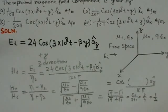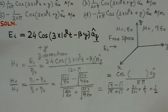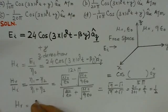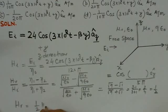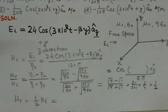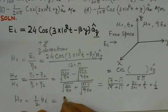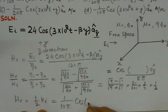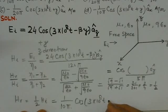If this value is 1/2, we can find Hr as 1/2 of Hi. Hi is known to us, so we can write the value for half of Hi: it will be (1/10π)cos(3×10^8t + βy)ax.